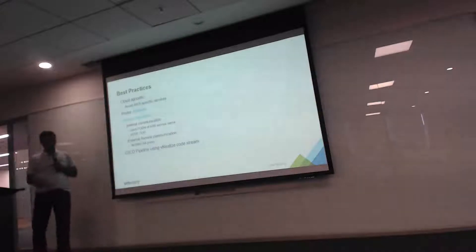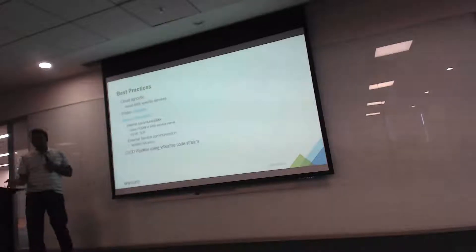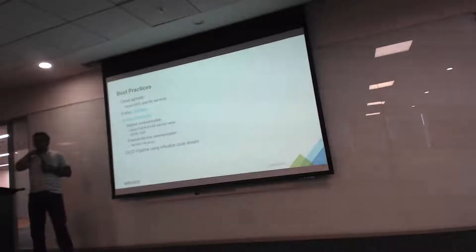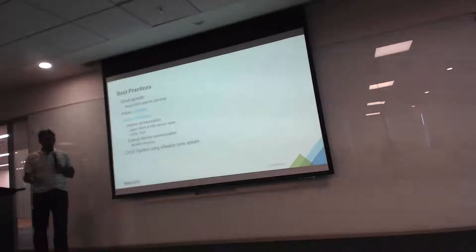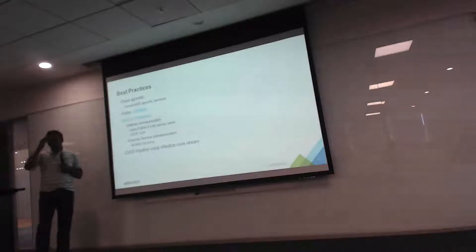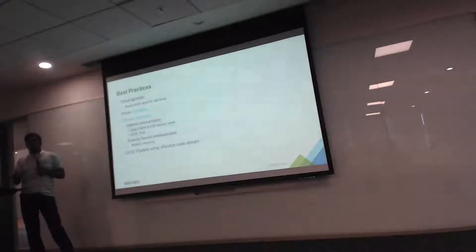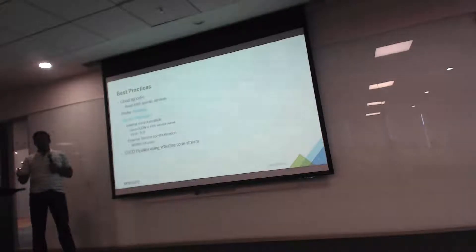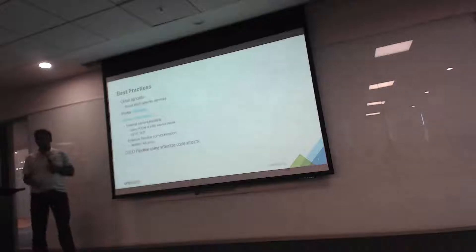A few things we follow in our current SaaS offerings: we try to be cloud-agnostic. Configuring Postgres streaming replication in a container with automated failover is very difficult, but we go through that pain rather than using AWS RDS. We intentionally avoid using AWS-specific services directly. The only AWS-specific service we use is Route 53 as our entry point. And whenever possible, we always prefer stateless.